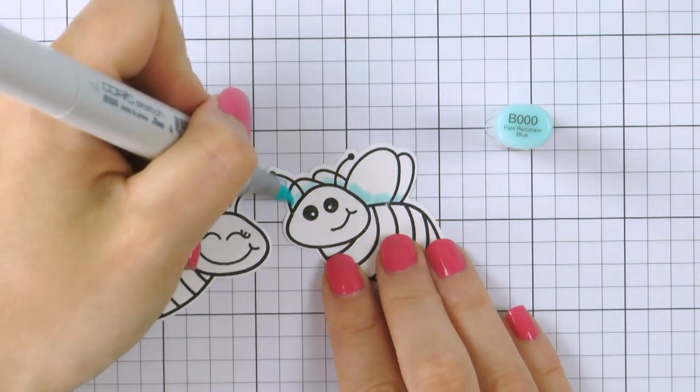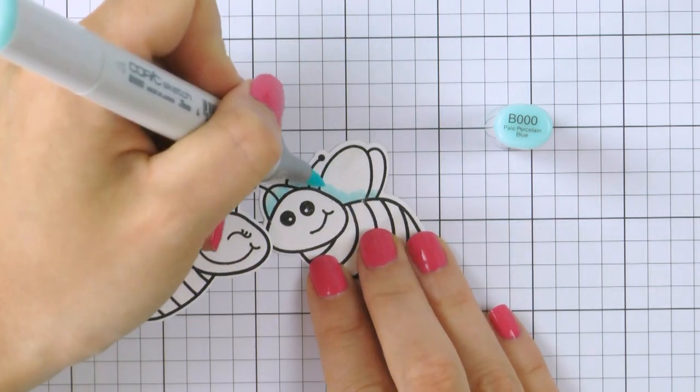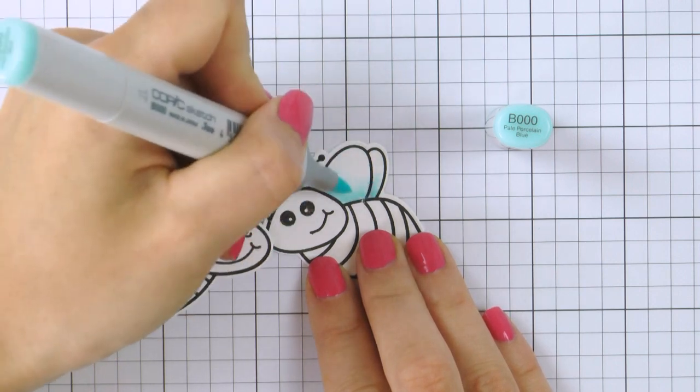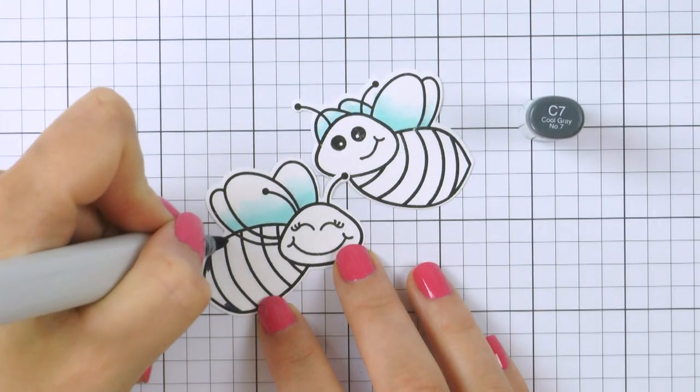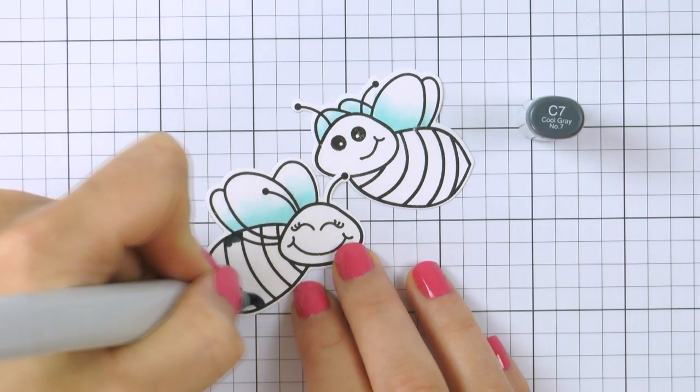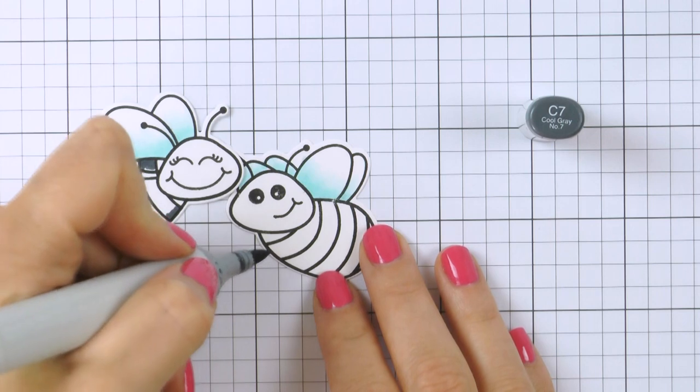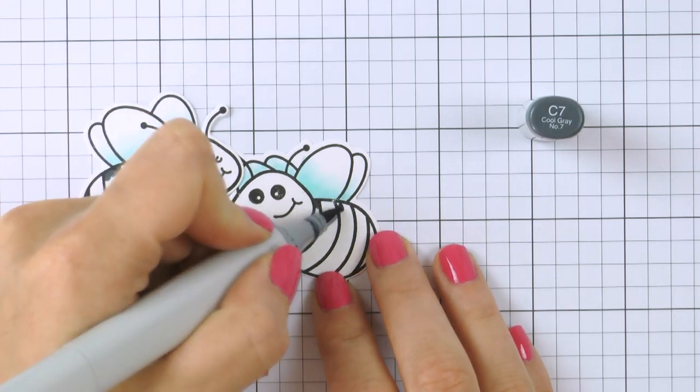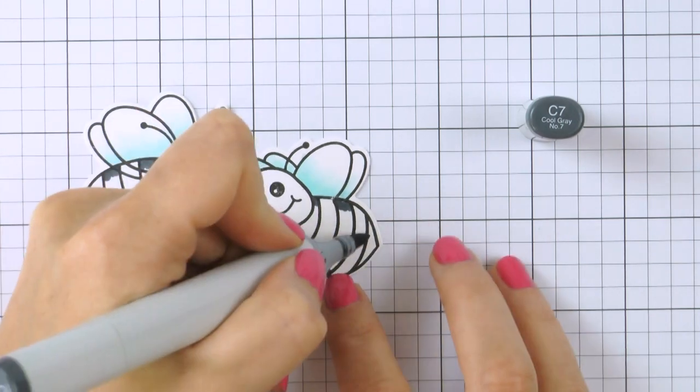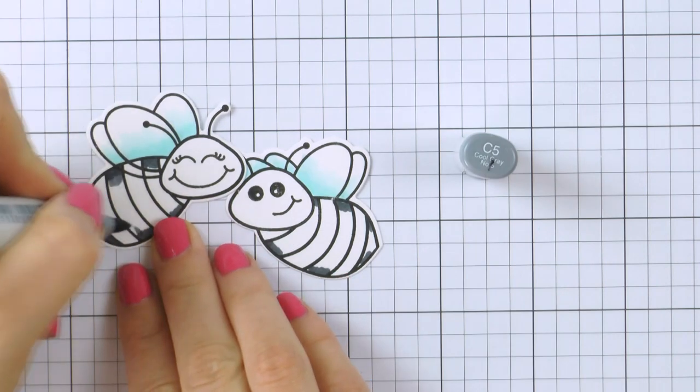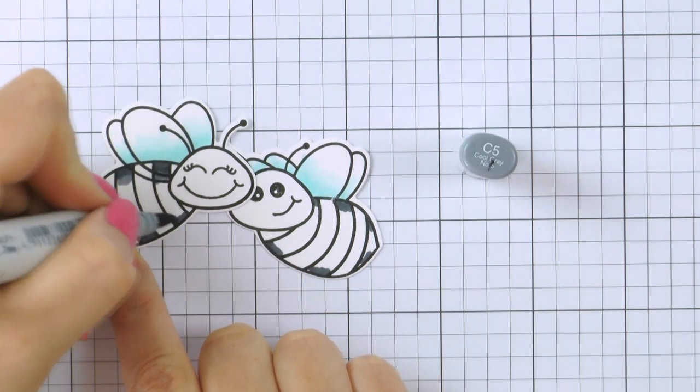So here I'm using B00 and B000 to color the wings of my bees. You can keep them white but by adding a little bit of that light blue it makes them just more appealing to the eye. You can also cut the wings off and replace them with vellum wings if you'd like to take things up a notch.